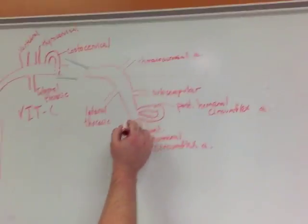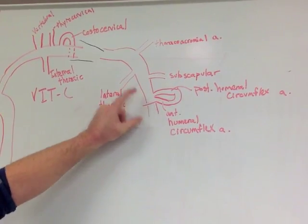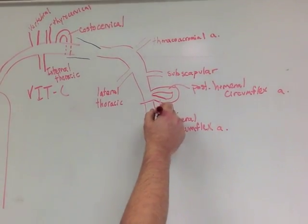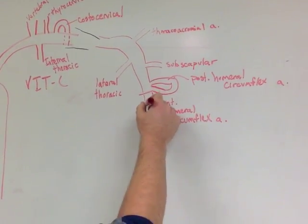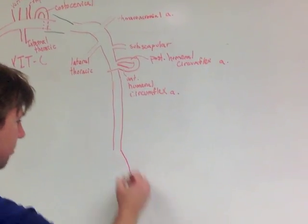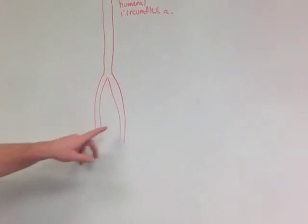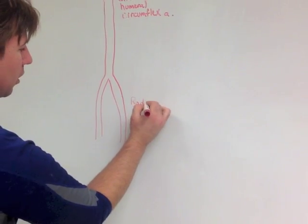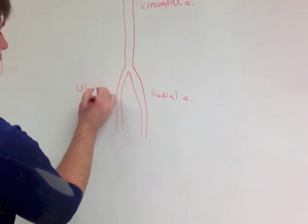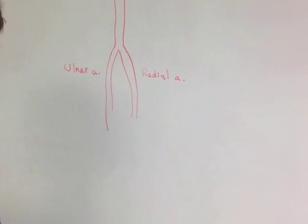Once we've passed the anterior and posterior humeral circumflex, our axillary artery is now our brachial artery, so we're finally in the arm. And brachial artery is going to come down until we get to about the antecubital fossa, at which point it's going to split into radial and ulnar. And we'll continue on down when we get to the hand.